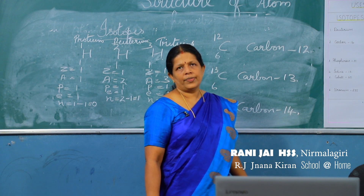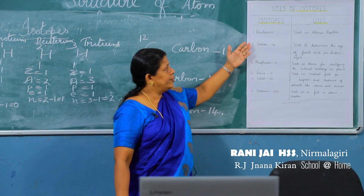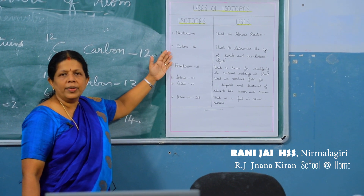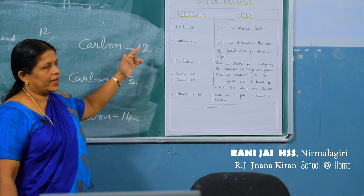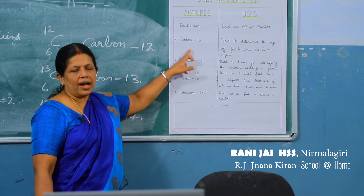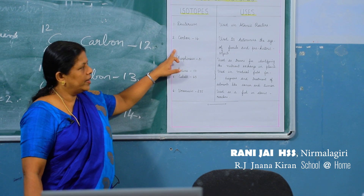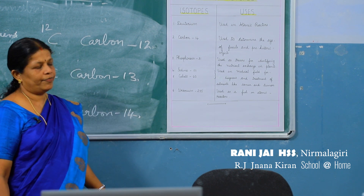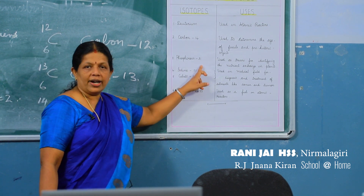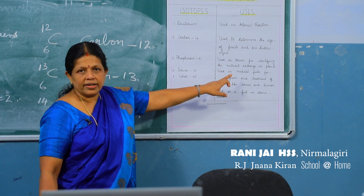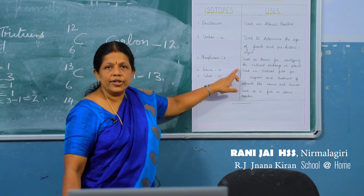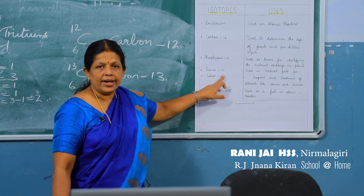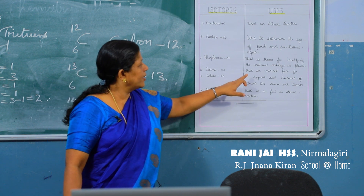Now we have to study the uses of isotopes. Deuterium, the isotope of hydrogen, is used in atomic reactors. Carbon-14, the isotope of carbon, is used to determine the age of fossils and prehistoric objects.